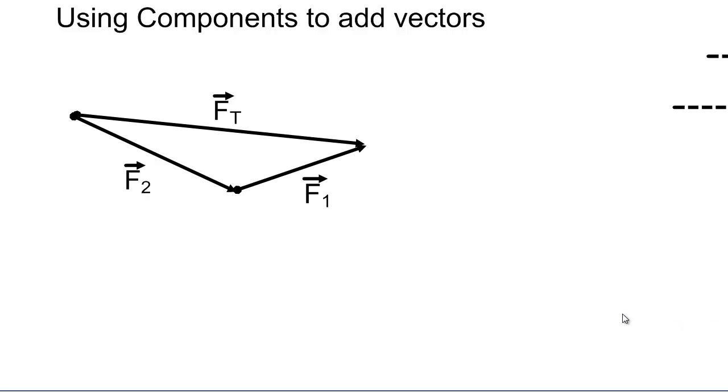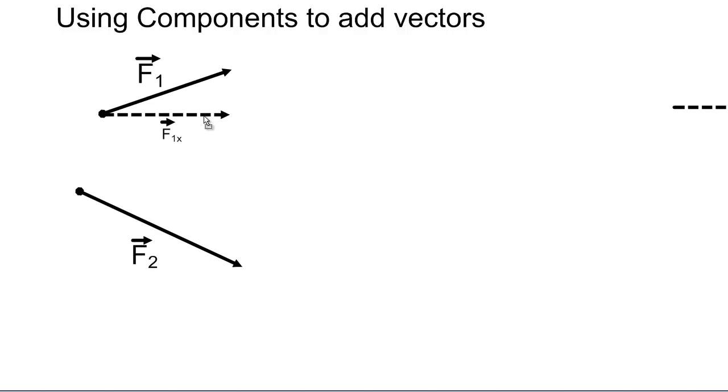A second way is to break both of the vectors down into their x and y components and then do simple right angle triangle stuff. And so it's just a matter of taking my angles and using SOHCAHTOA to figure out the x and y components of each of these vectors.